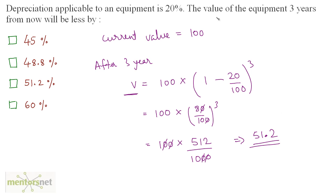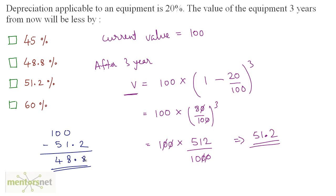The question asks how much less the value will be 3 years from now. The current value is 100 minus the value after 3 years: 100 minus 51.2 gives 48.8 percent. So it will be less by 48.8%. We say percent because we took the current value as the base of 100.